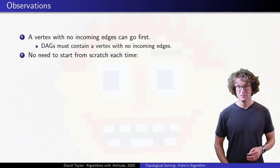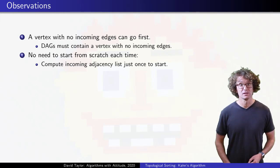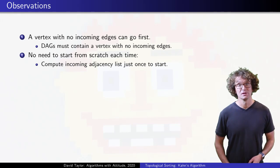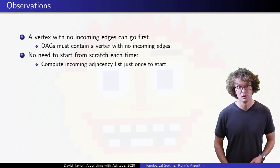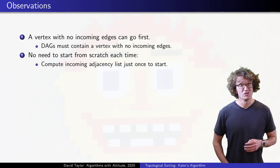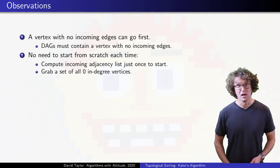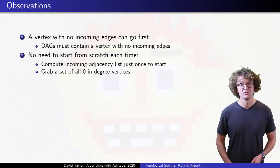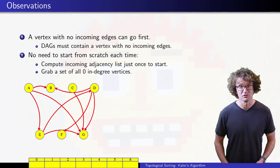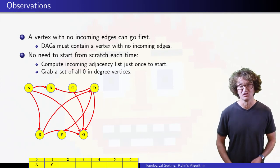To make it faster, maybe we don't need to do that from scratch after every vertex. To start the algorithm, in time linear for the size of the graph, we can create an incoming list for each vertex. How to do that was covered in the graph representation video from the graph basics playlist. With those incoming adjacency lists, we can find all vertices with no incoming edges, those are the vertices that can go first. We can add all of those vertices to make an ordered list of vertices that are ready to go, A and C here.